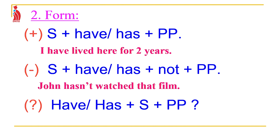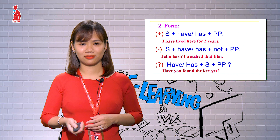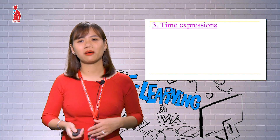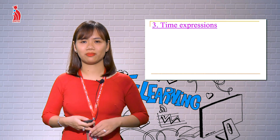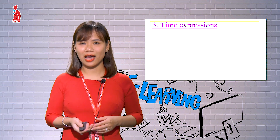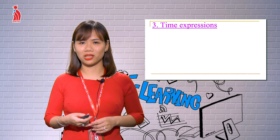For the question form, invert the auxiliary verb before the subject. Now let's talk about the time expressions — the signal words used with the present perfect tense.